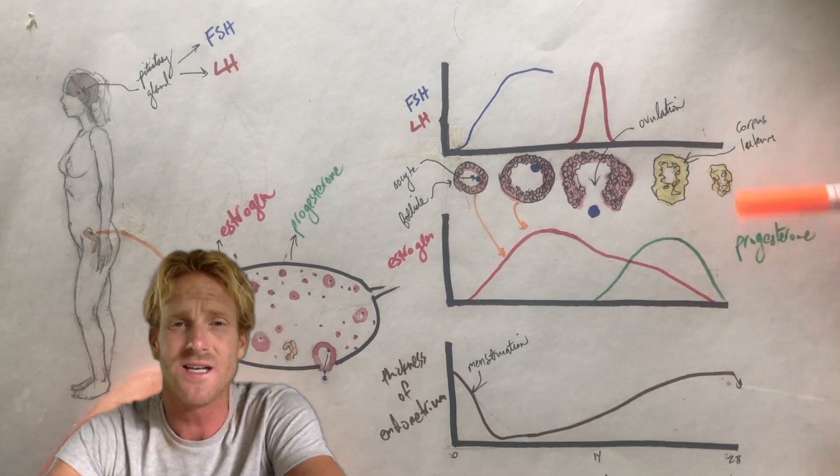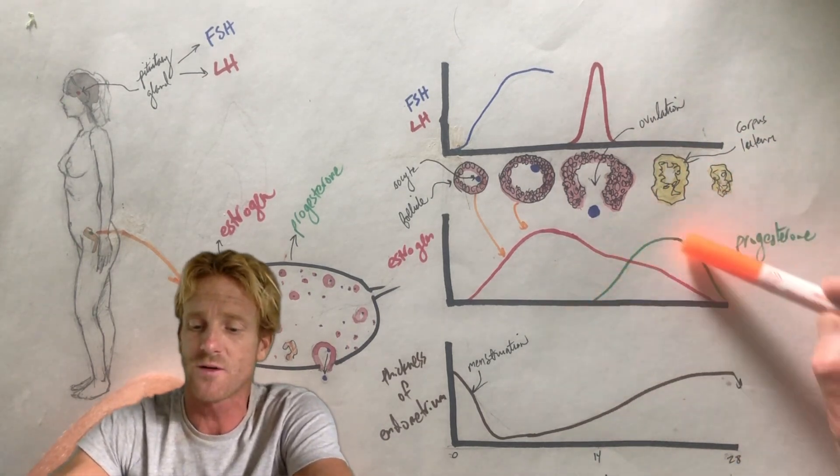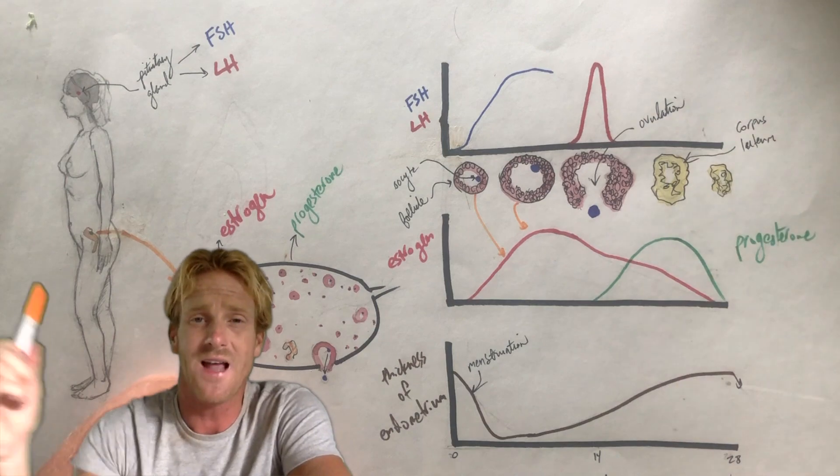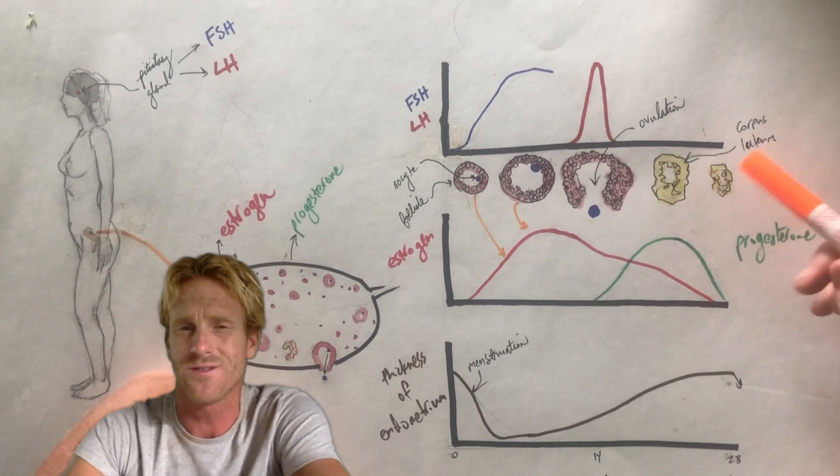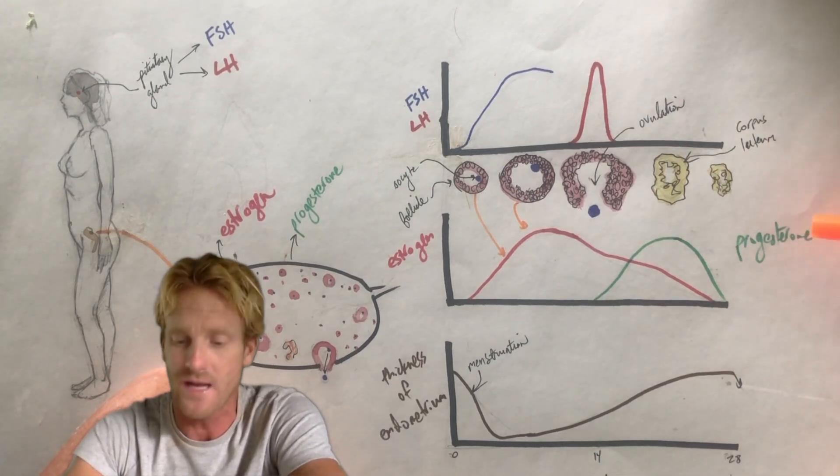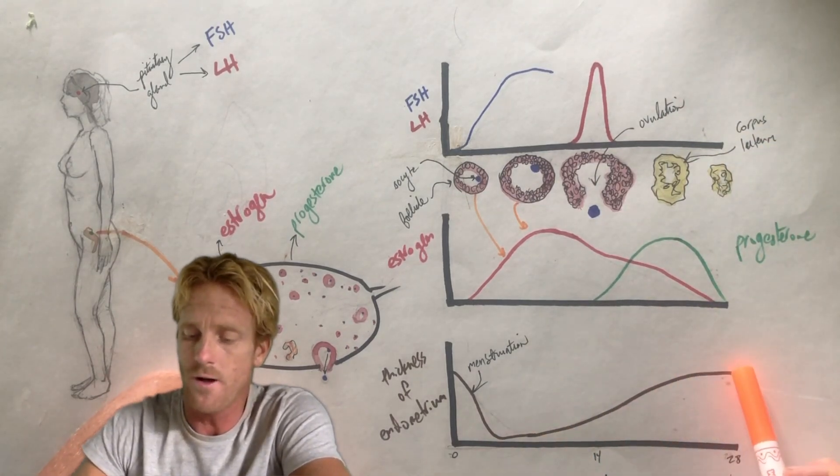The corpus luteum is then going to continue secreting hormones, but it's mainly going to secrete progesterone. Progesterone is going to have two major functions. Number one, progesterone is going to inhibit the release of FSH, and progesterone is going to cause the lining of the uterus to thicken. So the thickness of the uterus gets greater.